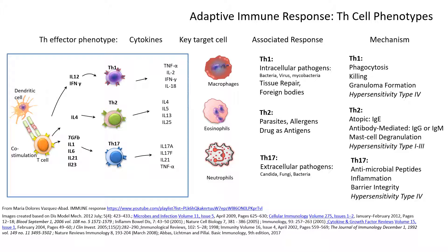This is also one of the potential mechanisms for hypersensitivity type 4, also called delayed-type hypersensitivity, which can be either a TH1 or a TH17 response. Hypersensitivity types 1, 2, and 3, on the other hand, are TH2 responses.